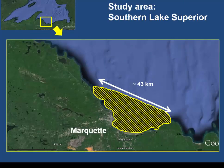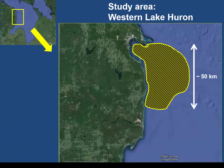In Lake Superior, the study area near Marquette was a yellow-hashed region where both anglers and trap nets collected and tagged fish — a distance well within the reported home range for lake trout. In western Lake Huron near Alpena, a similar-sized study area was used. Both areas were chosen because key sport fisheries operated there, enabling better tag recovery compared to less-sampled ports with lower fishing effort.